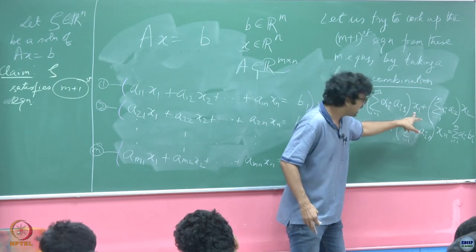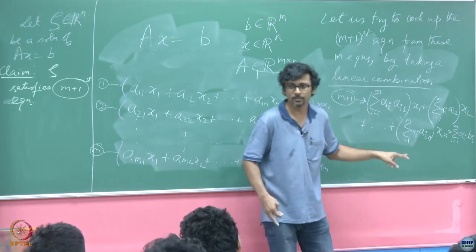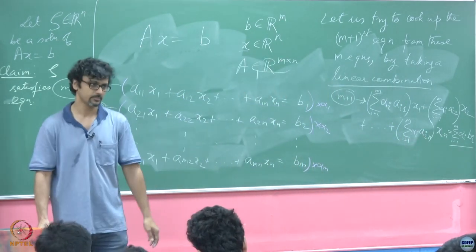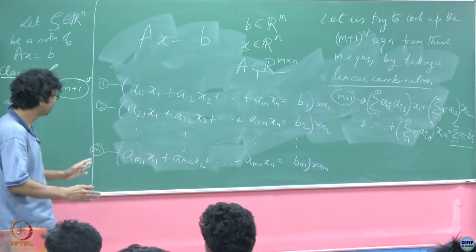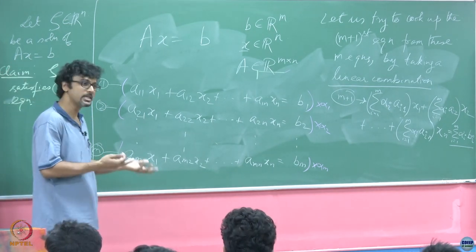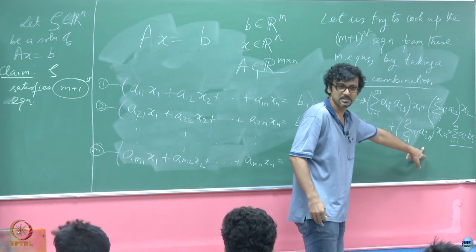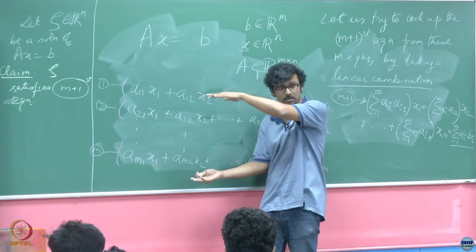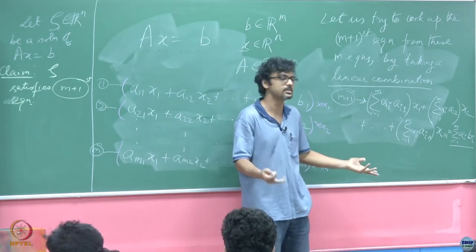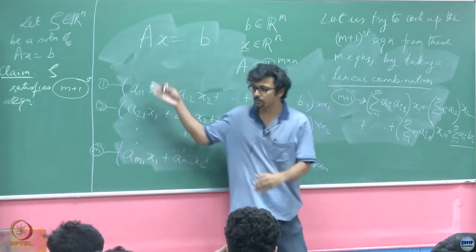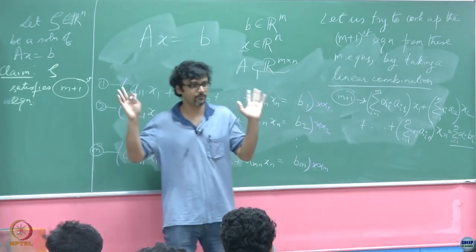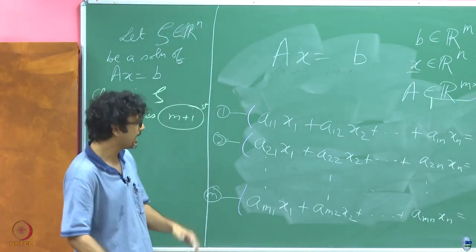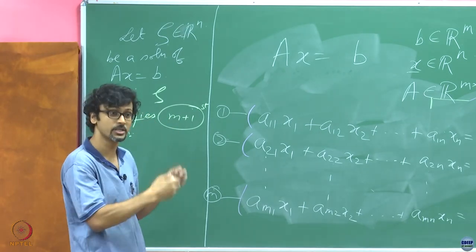What I am saying is: I had m equations originally and cooked up the m+1-th via a linear combination. If ζ satisfies the original system then ζ must also satisfy this new equation. To prove it, substitute ζ in place of x — each component substituted for x₁ through xₙ — and because ζ satisfies the original system, the left-hand side will equal the right-hand side. However, not every solution of just this one new equation is a solution of the original system, since it has far fewer constraints.